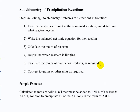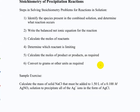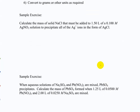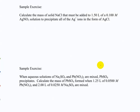Now we can do stoichiometry problems involving moles, mass, and concentration using net ionic equations. The general steps are: find the species present, write a balanced net ionic equation, then do the moles calculations. Here's a problem: calculate the mass of solid sodium chloride that must be added to 1.5 liters of a 0.100 molar silver nitrate solution to precipitate all of the silver ions as silver chloride.